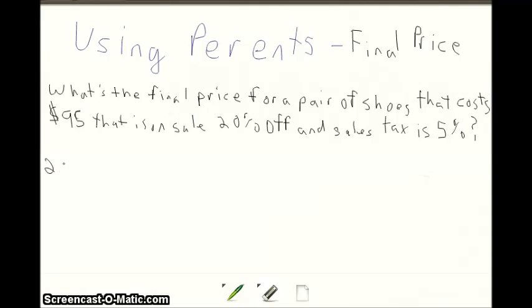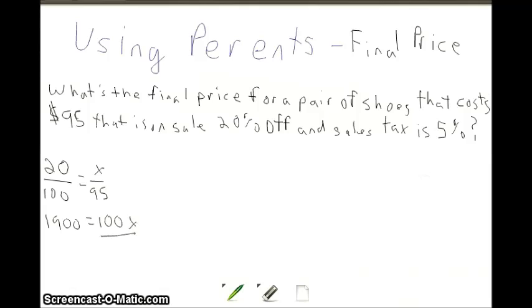We set up 20 over 100 equals x over 95. We cross multiply: 20 times 95 gives us 1900. We divide by 100 to get a discount of $19.